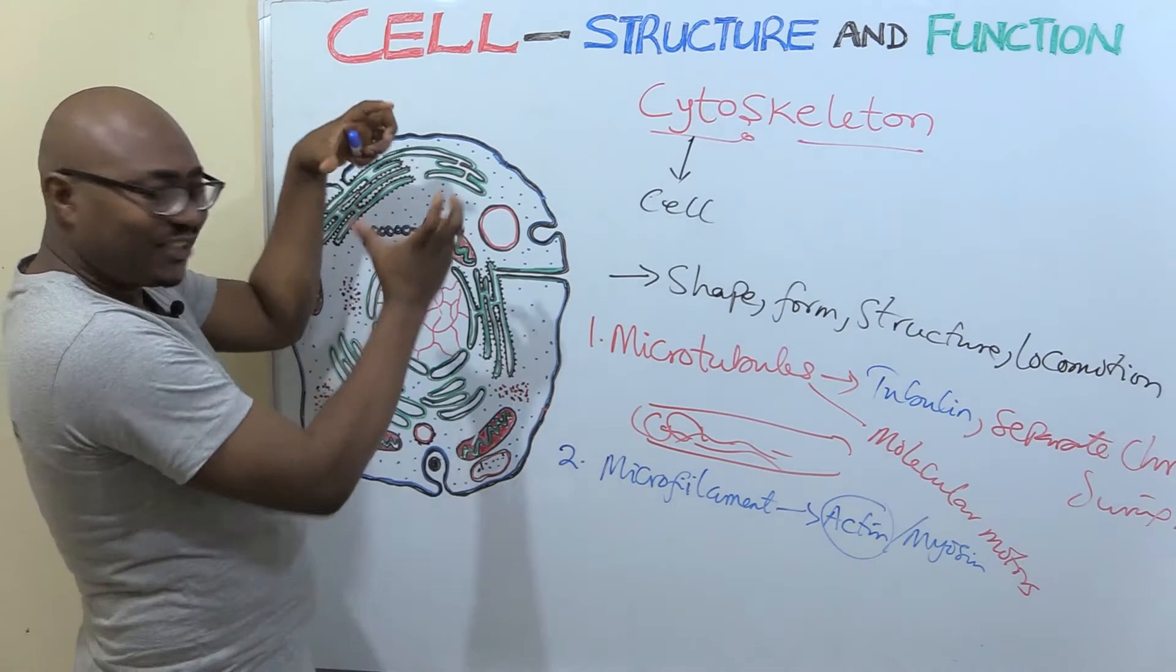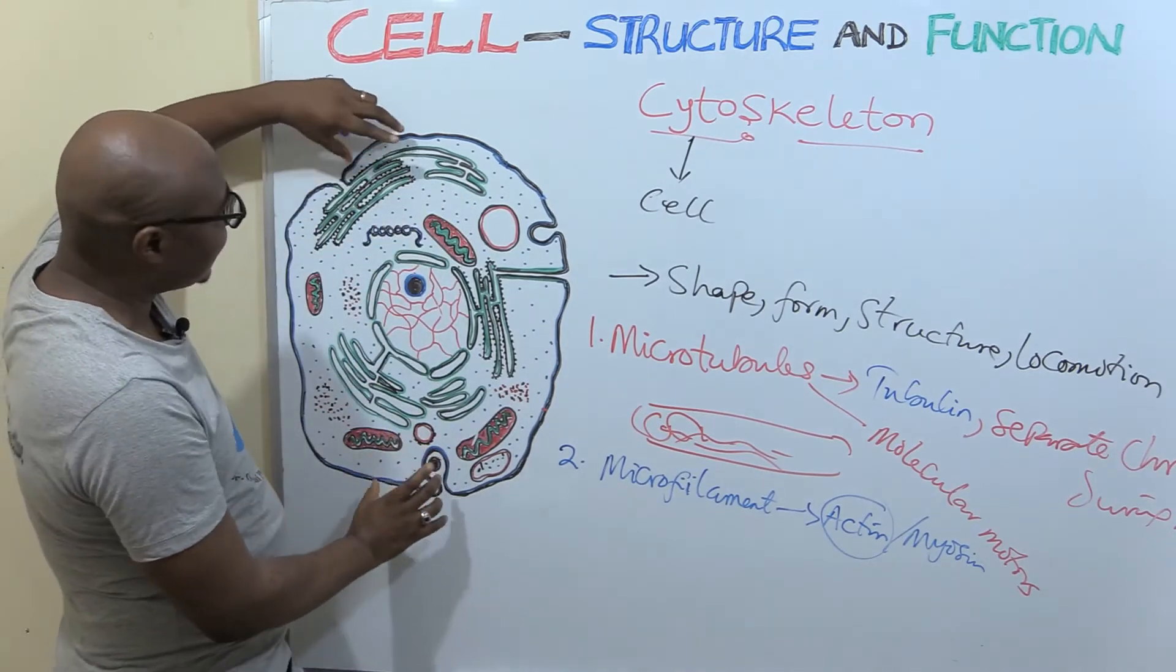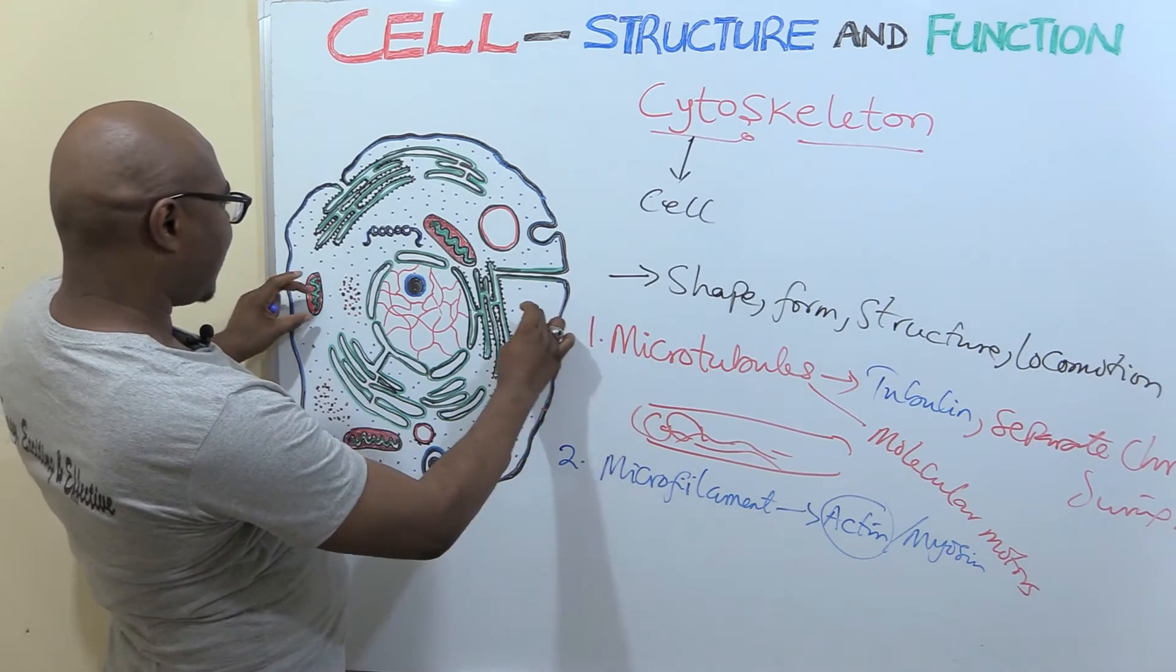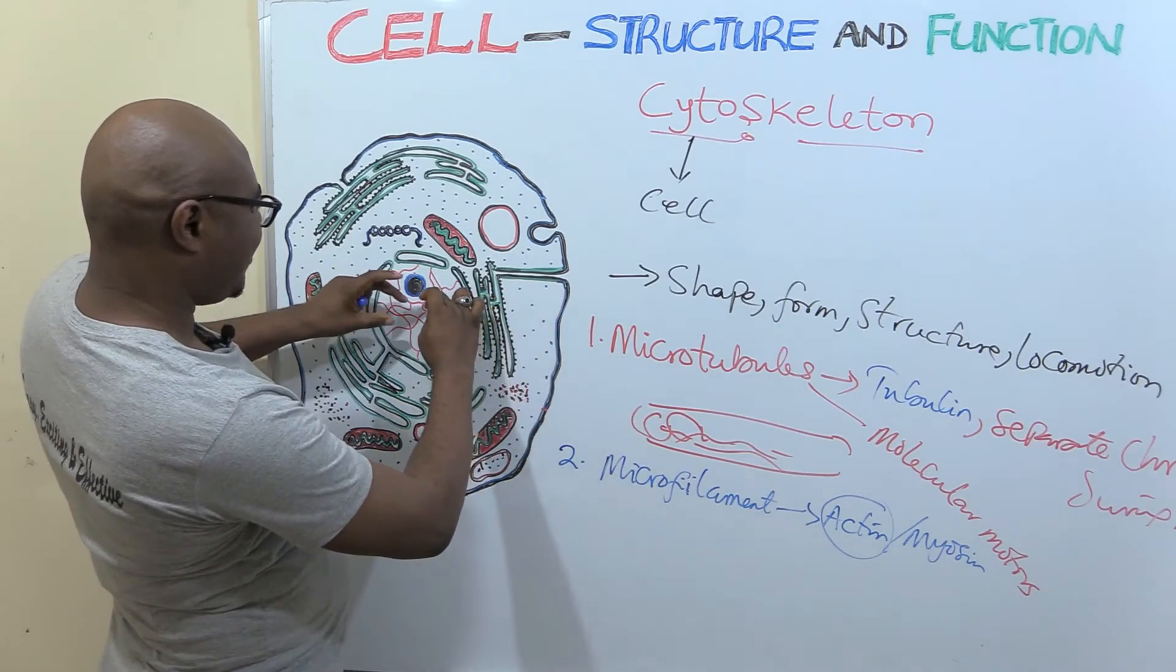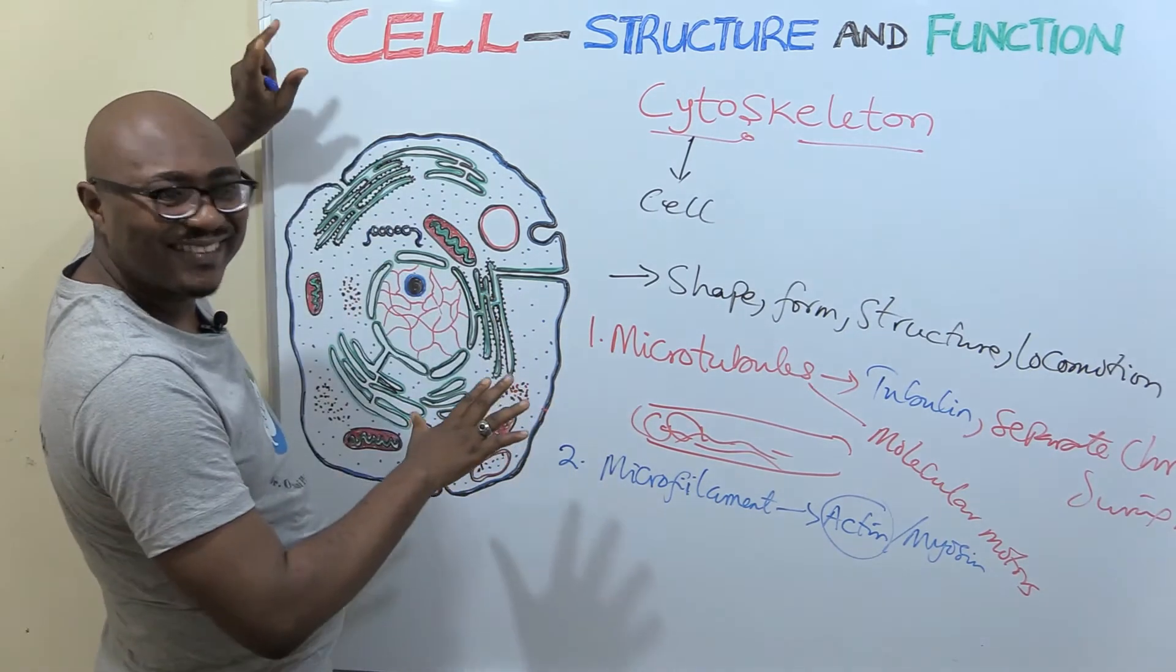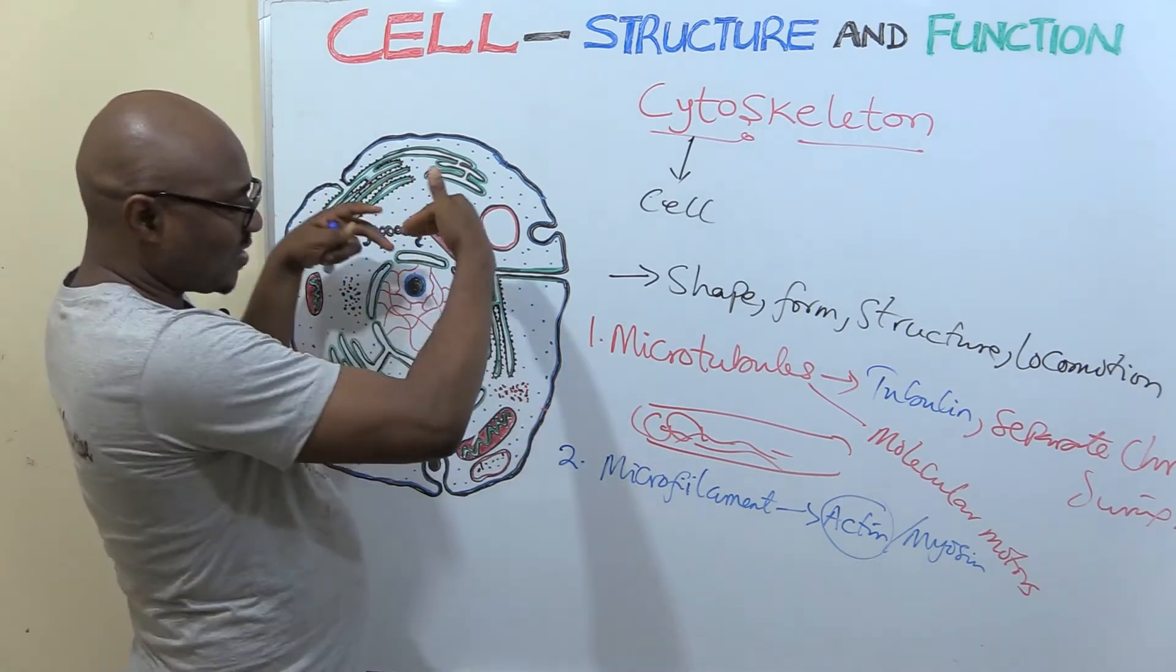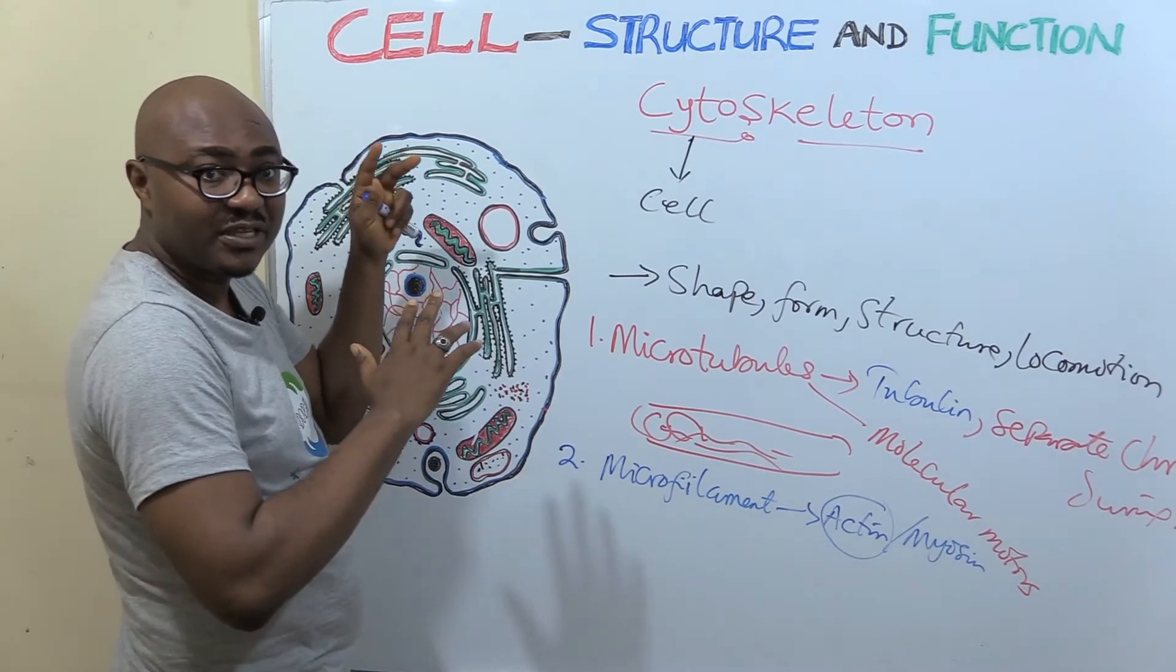Because it can change shape. So it's called cytokinesis. So the cell will divide into half like this. This part will start going inside, going inside till it cuts into two. So that's what actin does. Because it helps to change shape, it also helps in cell division.